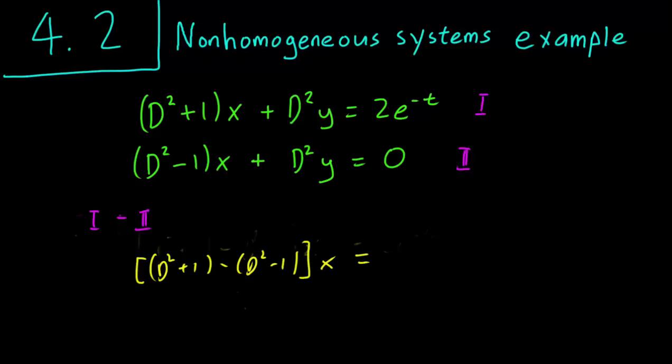And here is the step that students always forget. For a non-homogeneous system you have to remember to subtract the right-hand side as well. So you see there's a 2e^(-t) for the first equation and a 0 for the second equation, and we're subtracting them. So the right-hand side needs to have a 2e^(-t) minus 0 as well.